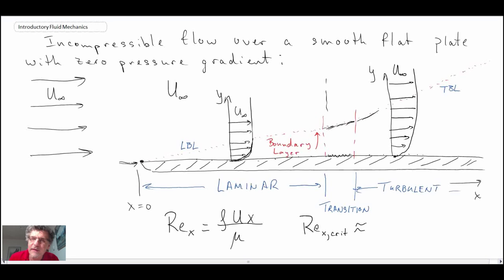And that is an approximation in terms of what it would be. The rule of thumb is 5 times 10 to the 5 would be what we use, and that's for a flat plate.